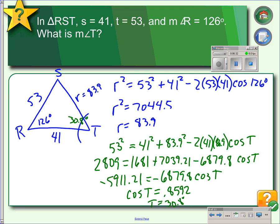If there are 180 degrees in a triangle, and we have 30.8 degrees in angle T and 126 degrees in angle R, that leaves us with 23.2 degrees in angle S. This makes sense because the smallest angle is across from the smallest side.